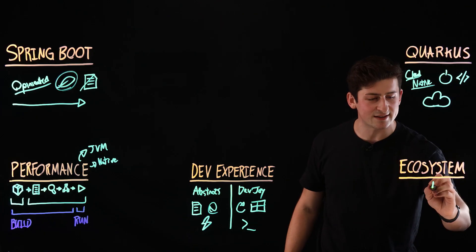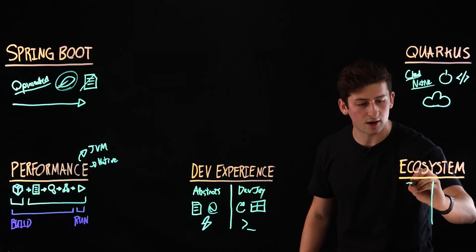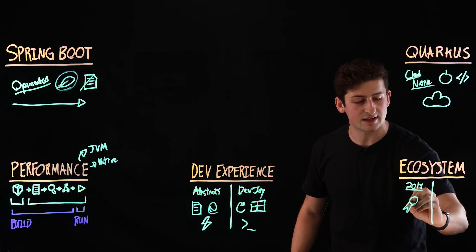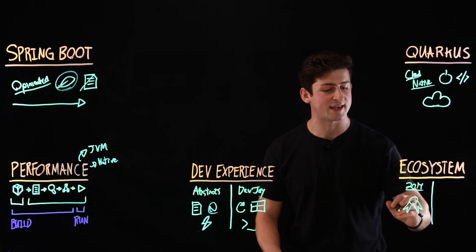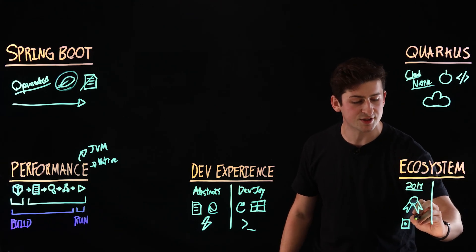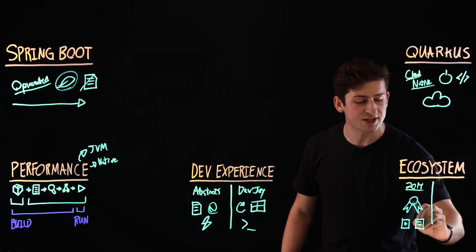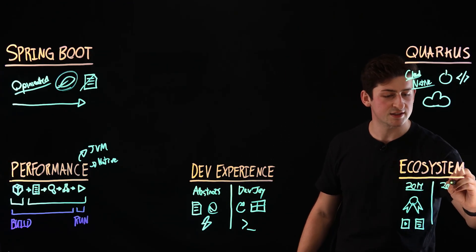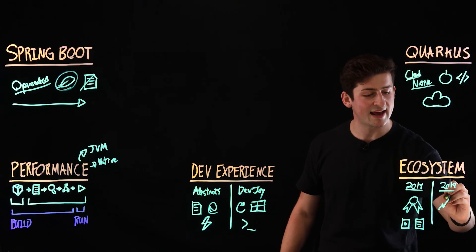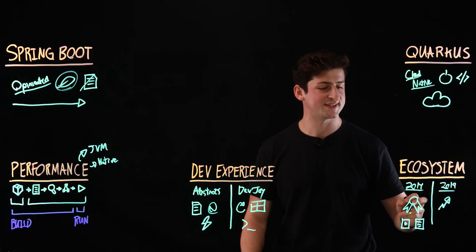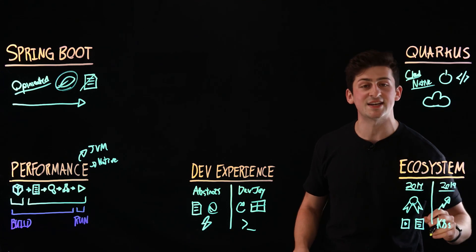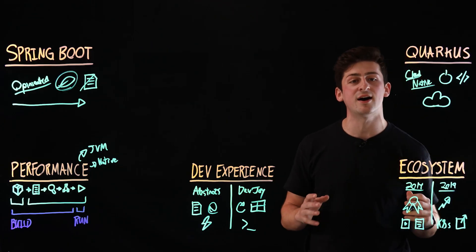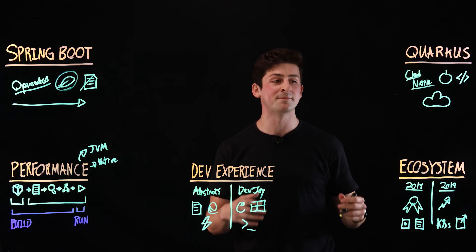Let's also talk about the ecosystem for both of them. Spring Boot was originally created in 2014 and has since become the de facto standard for building enterprise Java applications. Because of this, it has quite a large community with extensive documentation and resources for building and debugging applications. Quarkus, on the other hand, was created in 2019 and has been rising in popularity ever since, partially due to the popularization of Kubernetes as a container orchestration system, and because of its extensibility with over 800 different extensions you can use for your projects.